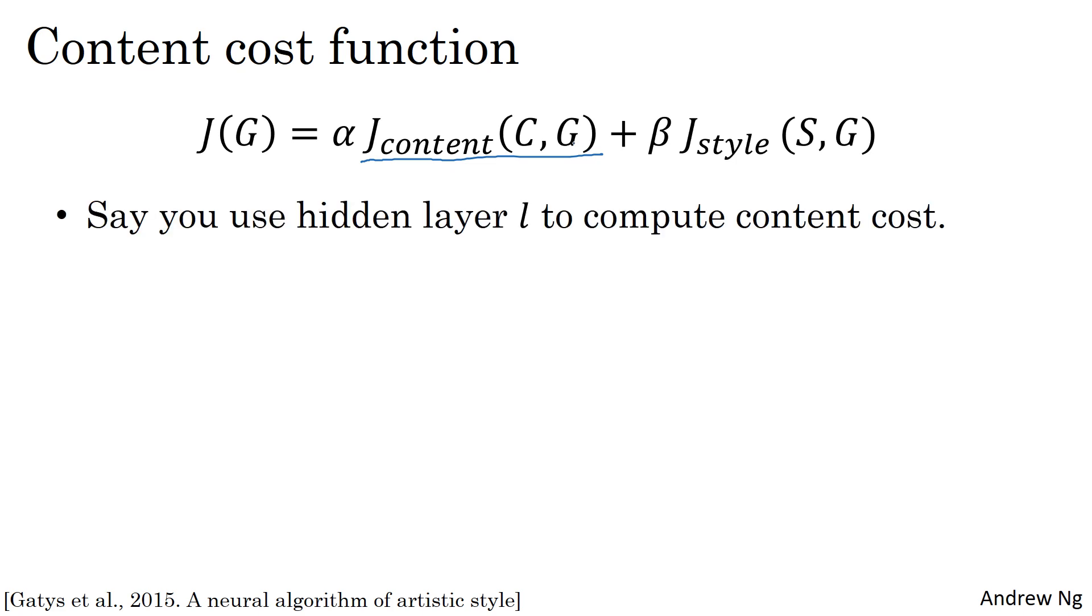Let's say you use hidden layer L to compute the content cost. If L is a very small number, if you use hidden layer 1, then it will force your generated image to have pixel values very similar to your content image.